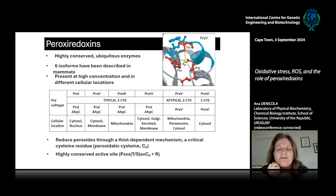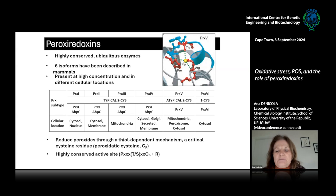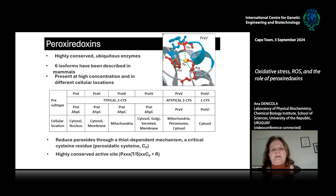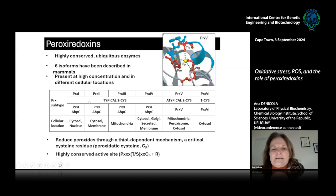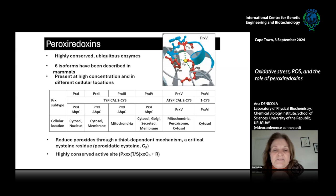Peroxyredoxins are present in all organisms — they are ubiquitous, highly conserved enzymes, and the active site is also highly conserved. There are six isoforms in mammals, present at high concentrations in different subcellular locations. They are classified considering the number of cysteine residues at the active site.